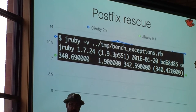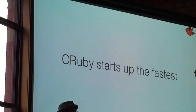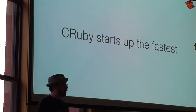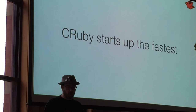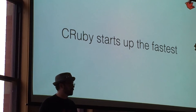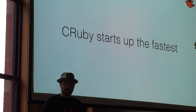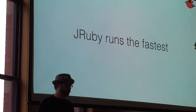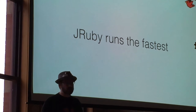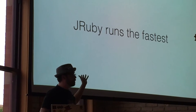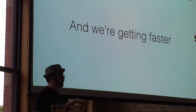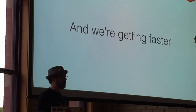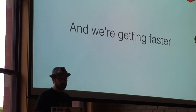So straight-line performance stuff. CRuby starts up the fastest. There's nothing we can really do about that — they're all native code, they're starting hot right away. We are working on improving JRuby startup. If you want something that starts up quickly, you're doing scripting or whatever at the command line, we still use CRuby. But JRuby runs the fastest. If we don't run the fastest, let us know if there's something wrong. We can fix it. And we're continuing to get faster. This is just a handful of quick optimizations that we did.